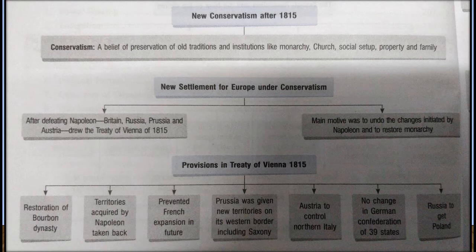Moving on to new conservatism after 1815. Conservatism is a belief of preservation of old traditions and institutions like monarchy, church, social setup, property and family. After defeating Napoleon, Britain, Russia, Prussia and Austria drew the Treaty of Vienna in 1815. The main motive was to undo the changes initiated by Napoleon and to restore monarchy.